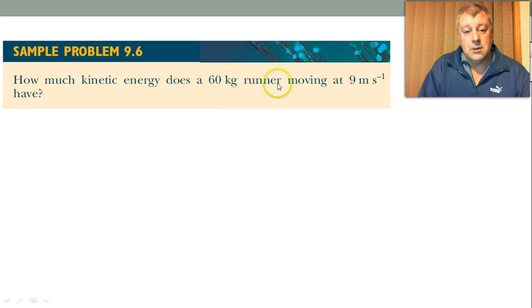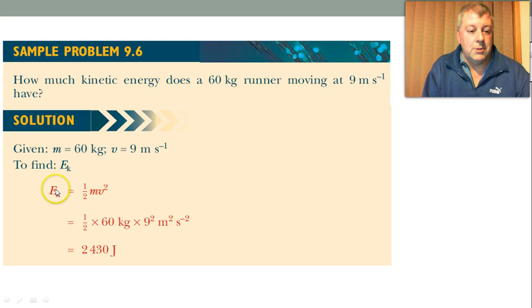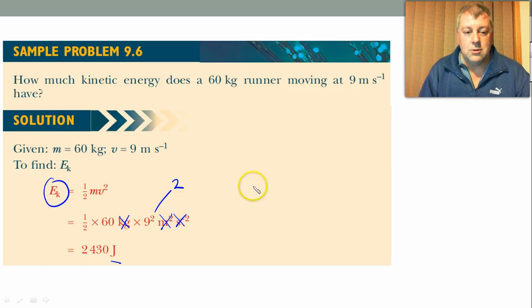How much kinetic energy does a 60 kilogram runner moving at nine meters per second have? Putting that into the formula, EK equals half mv squared. Don't worry about the units they put in here. I don't recommend that you put units in. This is from a Victorian book where they get all very serious about units. Just recognize that it's kinetic energy, so it's going to be in joules. And you can do that on your calculator. Don't forget the square. A lot of students like to forget the square.